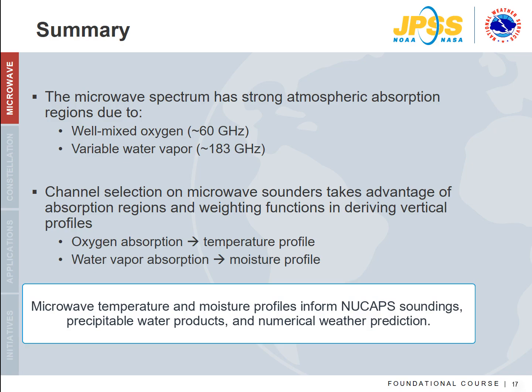To summarize, the microwave spectrum is influenced by strong absorption regions due to oxygen, which is well mixed in the atmosphere, and water vapor, which is variable. Channel selection on microwave sounders takes advantage of these absorption regions and the weighting functions of different frequencies for deriving vertical profiles. Oxygen absorption is used for temperature profiles, and water vapor absorption is used for moisture profiles. Applications in precipitation estimation and cloud retrievals will be discussed in a later module.